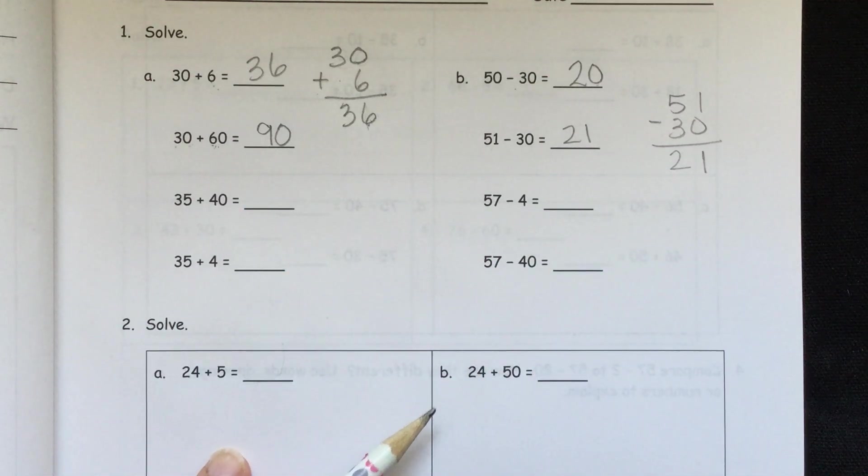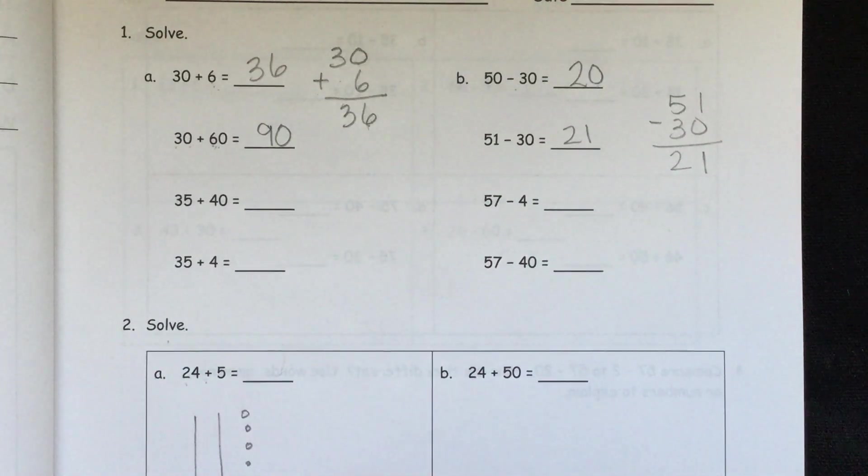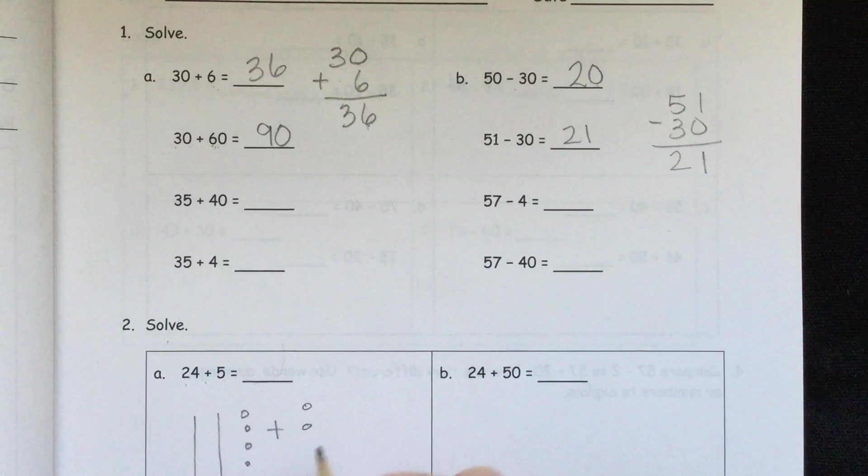On 2, it says solve. So they want you to come up with an answer. And it's always good to show your work. But we are going to do 10s and 1s since that's in our objective. So we'll have 24 plus 5. So we have 2 in the 10s column. So we have 2 10s. And we have our 1s. 1, 2, 3, 4. So we have 10, 20, 21, 22, 23, 24, plus 5. So those 5 is in the 1s column. So 1, 2, 3, 4, 5.